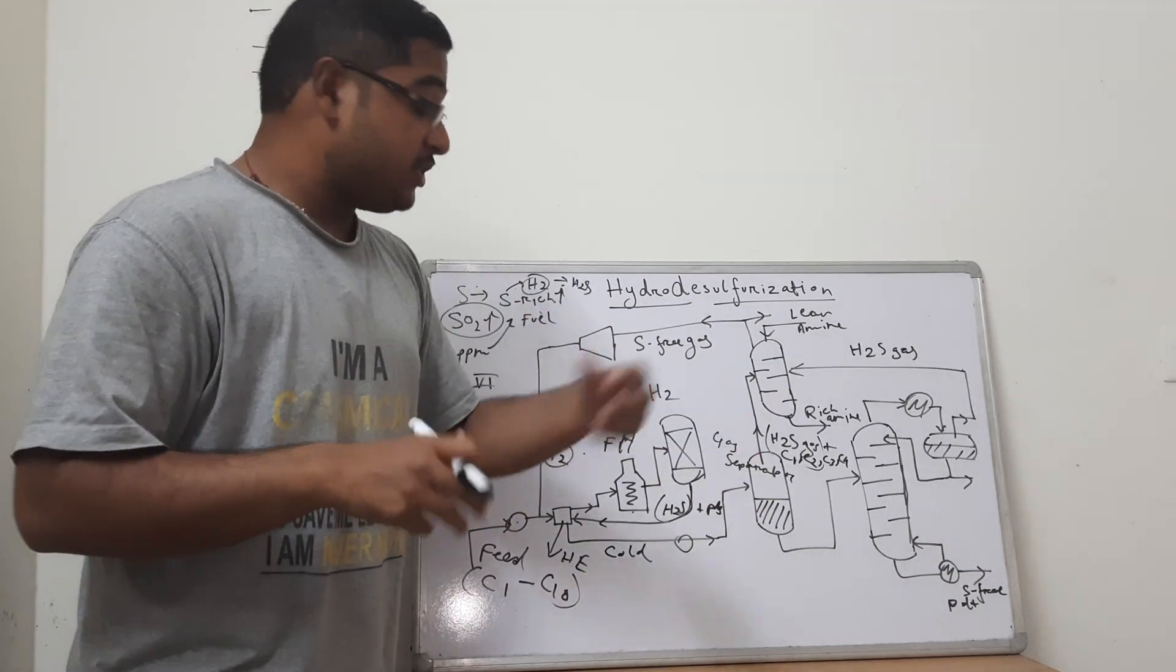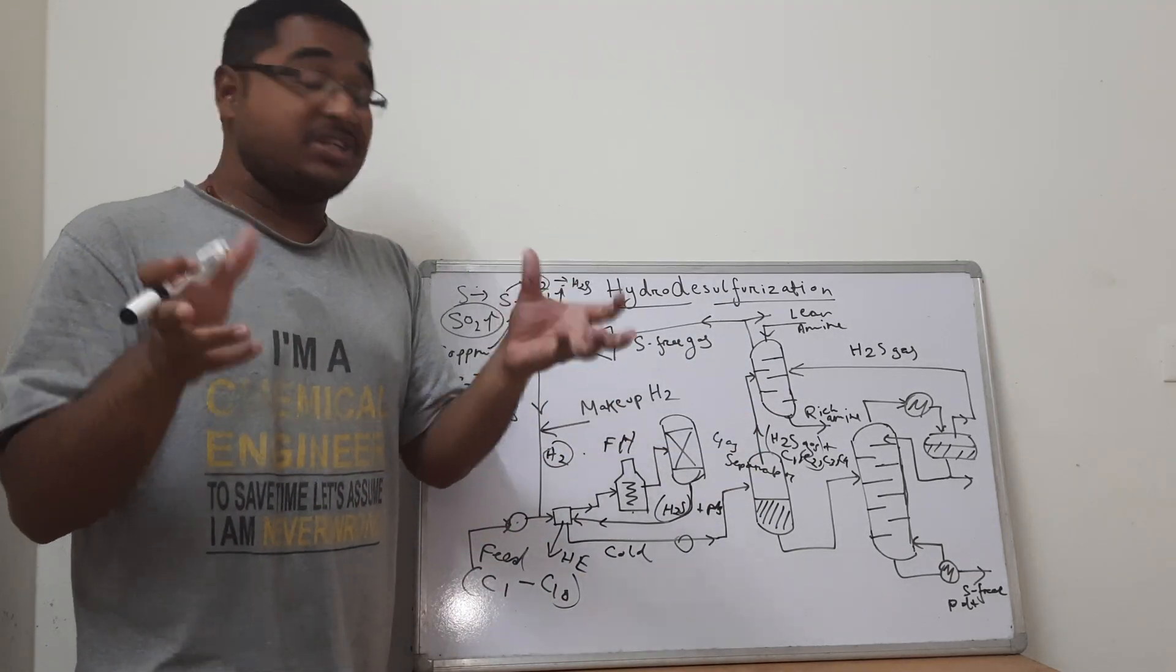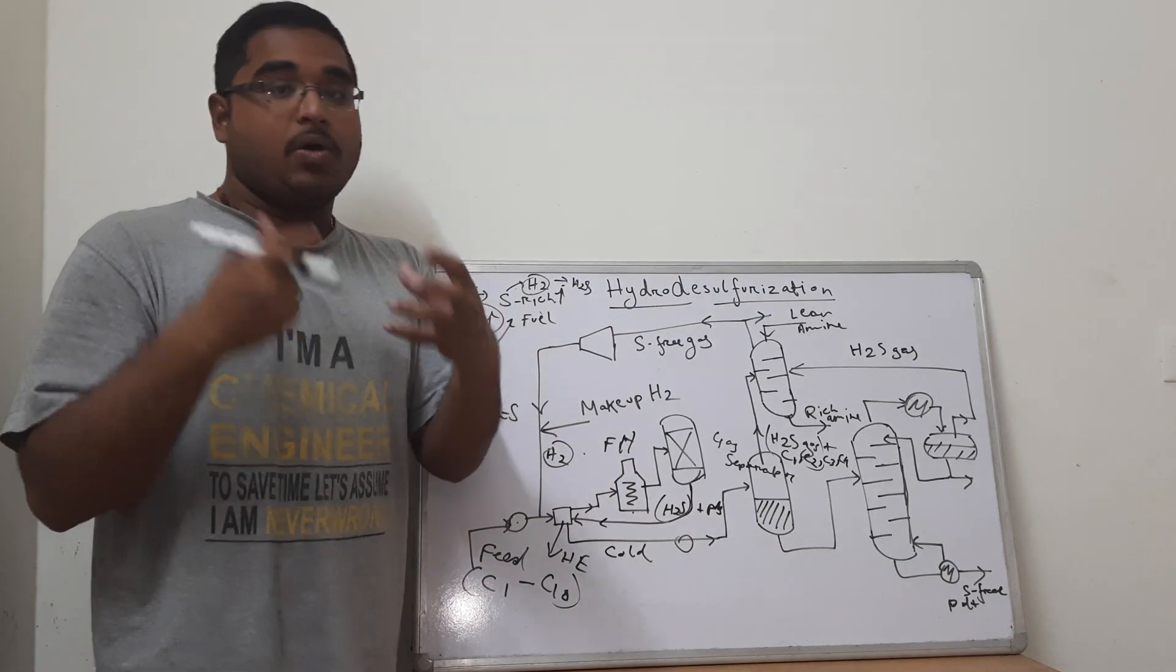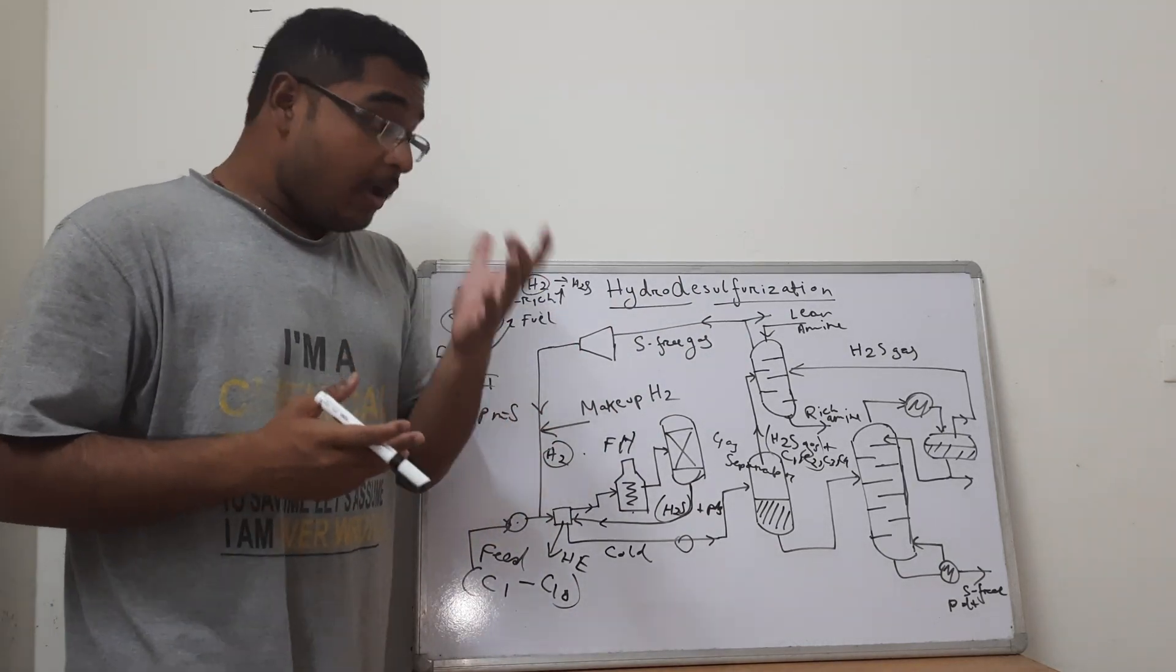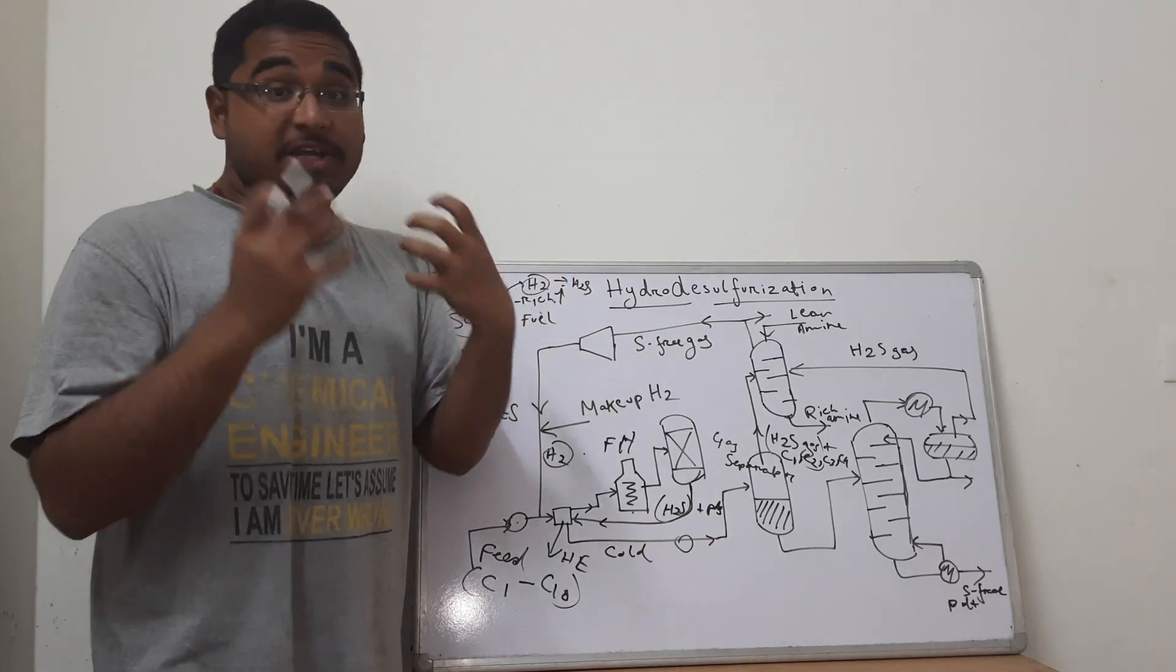So this will form a gaseous mixture of H2S gas plus C1, C2, C3, C4. Now we need to separate out the C1, C2, C3, C4 and what we do is we follow the technology popular in the industry that is amine stripping.